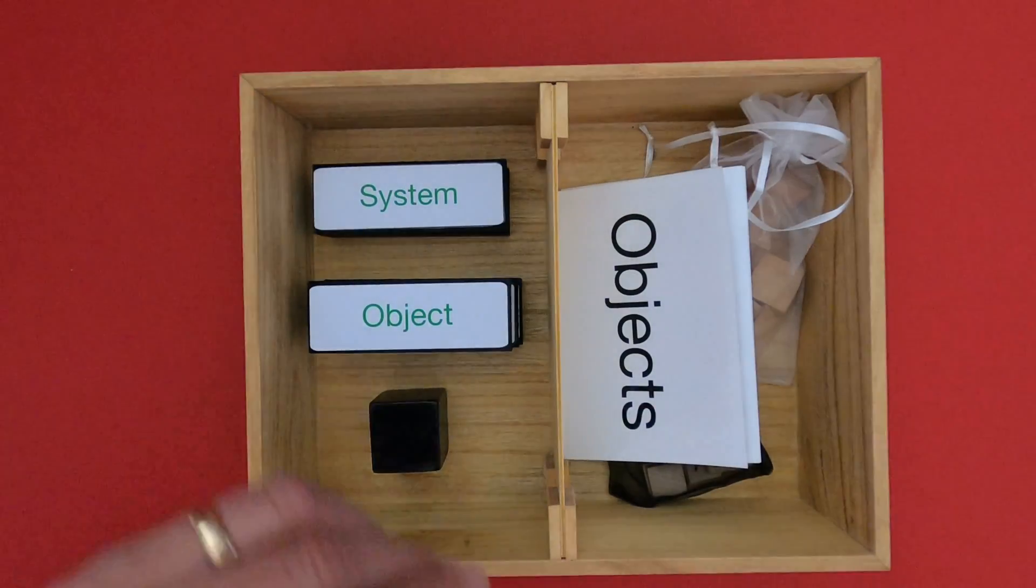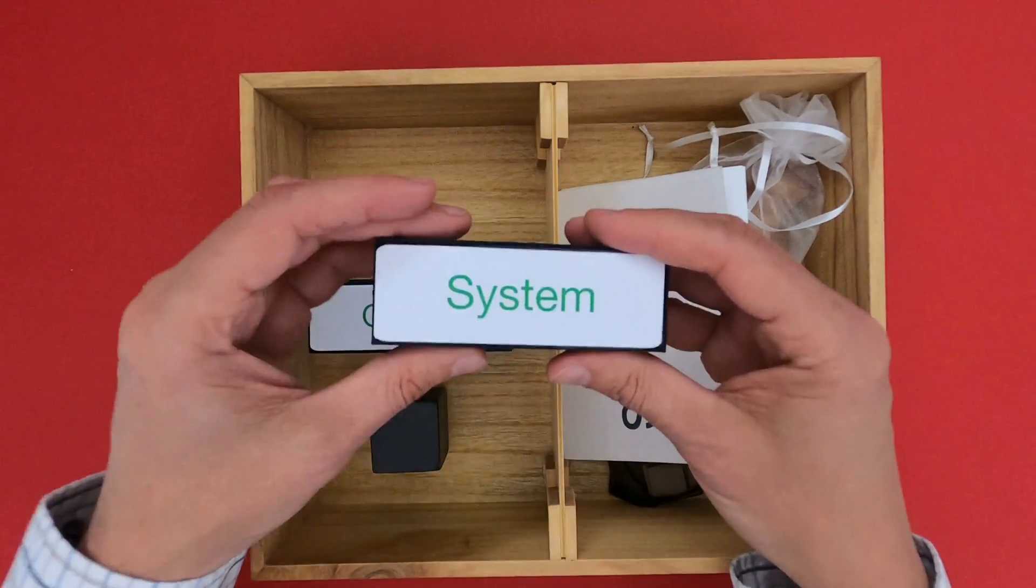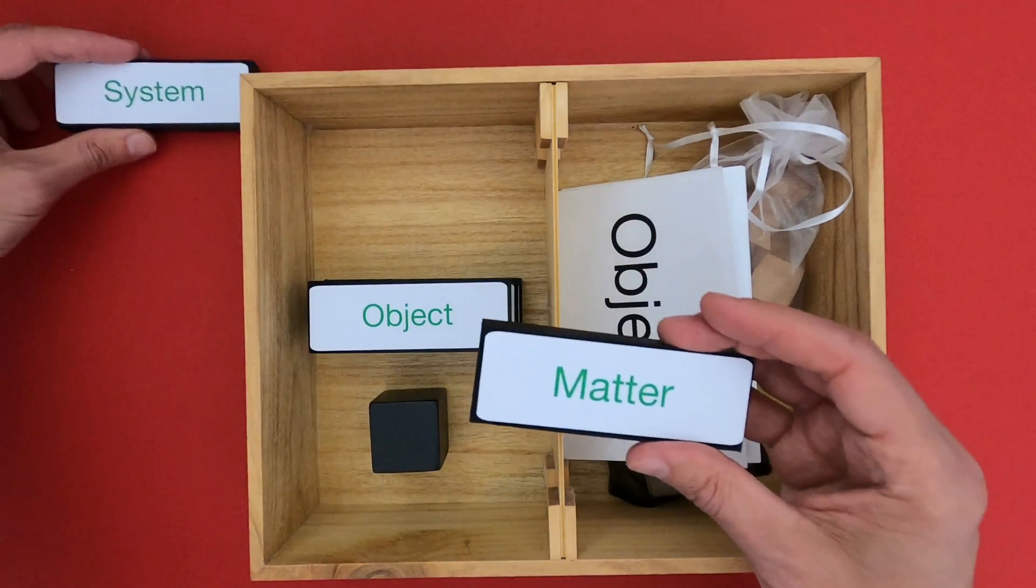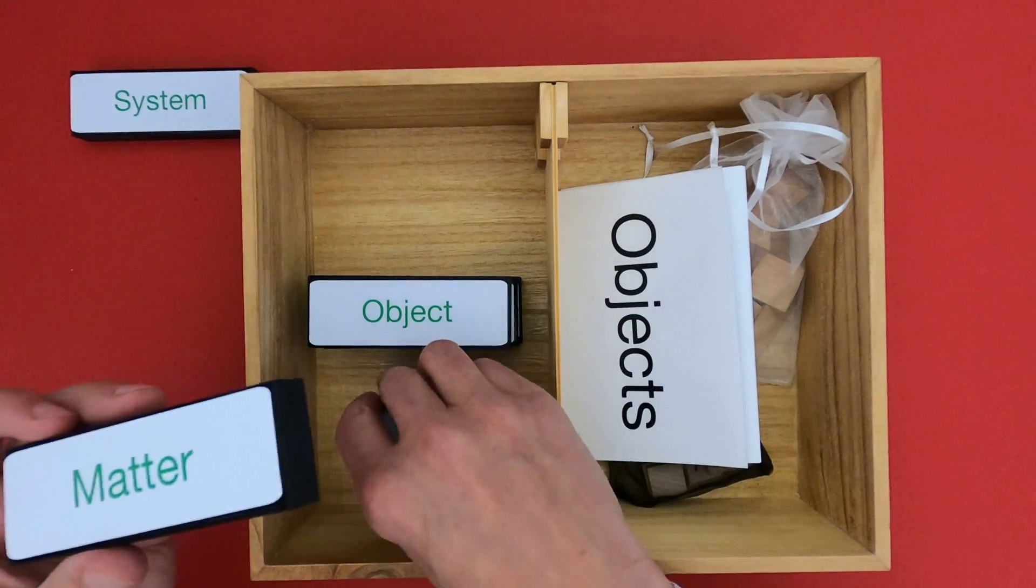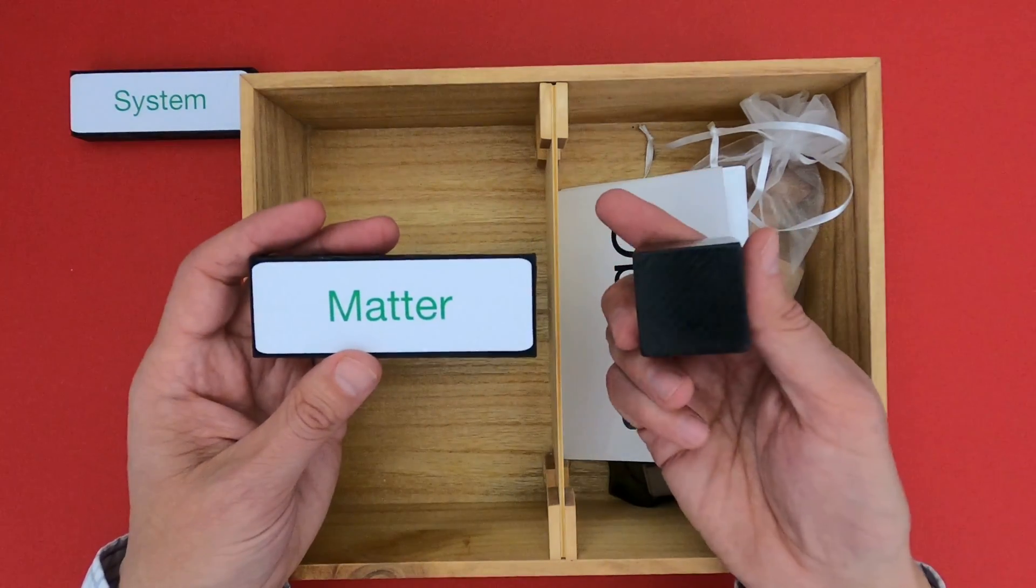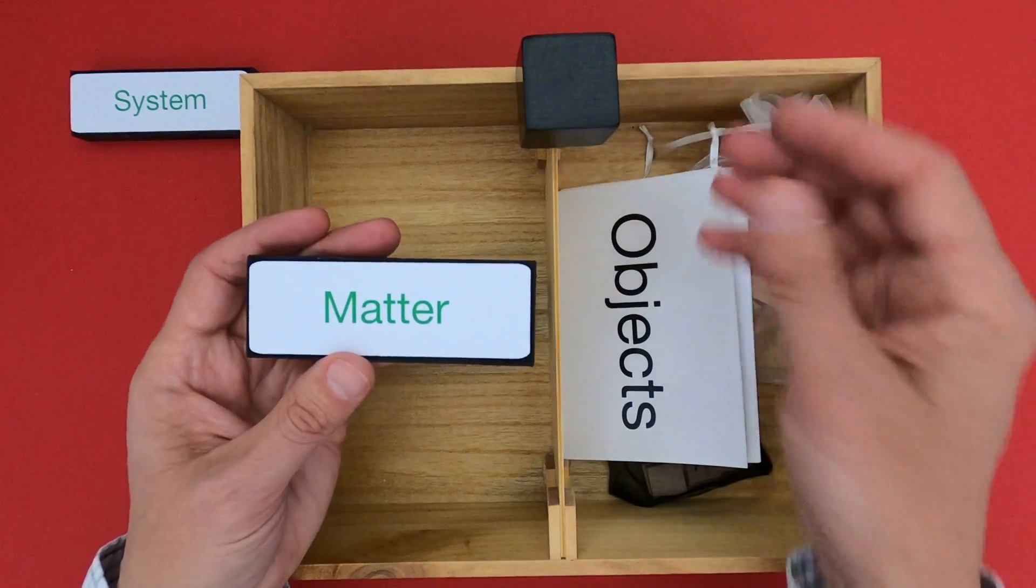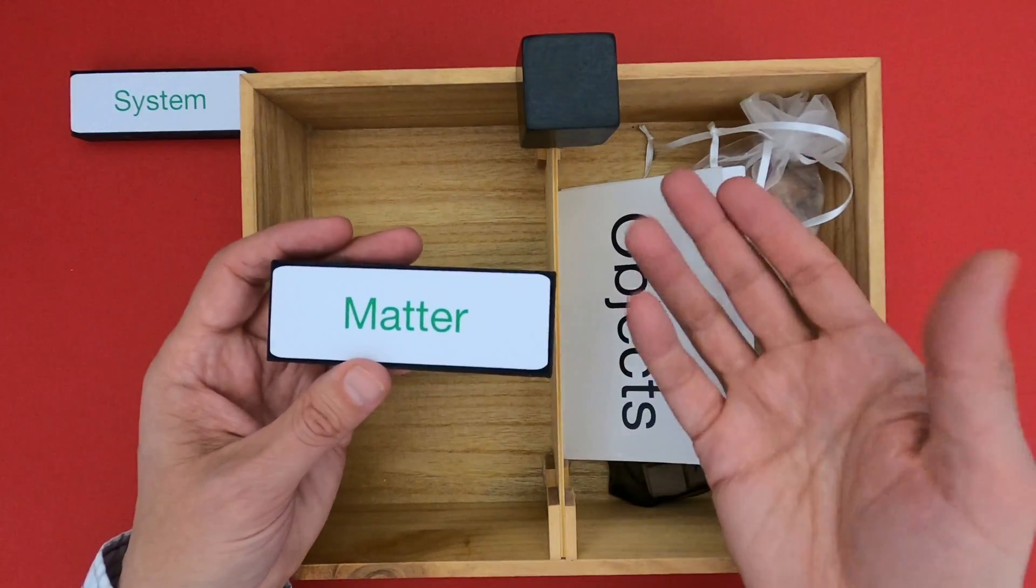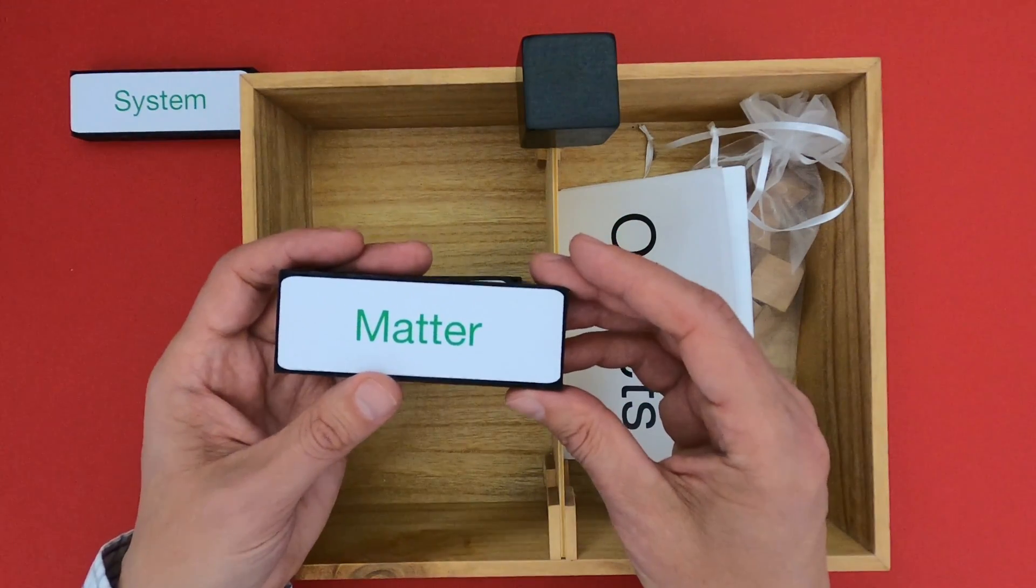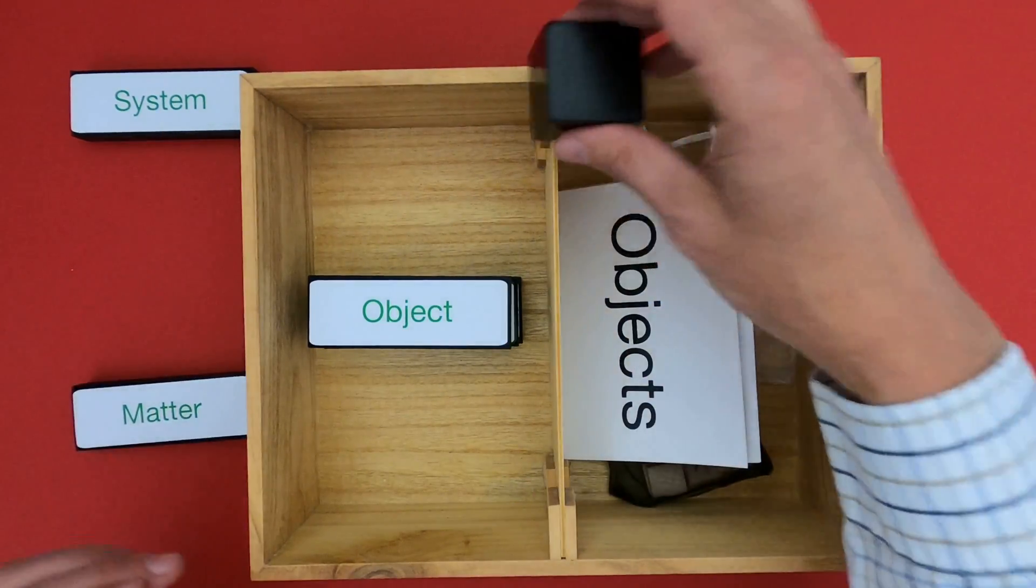When you're looking at matter, the first thing that you want to do is always define the system that you're going to investigate. But the object for matter will be a black cube, and the reason why is not only is it made of matter, but if you just sit it there, it'll stay there. It doesn't have any energy, and energy will be another concept that we're going to get to in a future video.